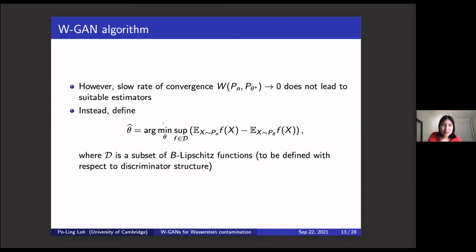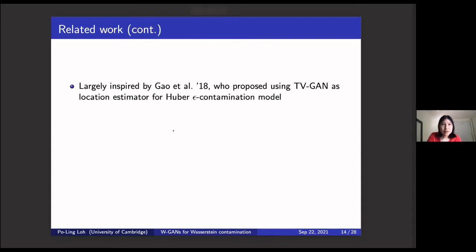Related work: in 2018, Chao Gao and coauthors looked at using the total variation GAN for location estimation in the Huber epsilon contamination model. In high dimensions, the Tukey median is known to perform optimally but is very hard to compute. Gao et al. proposed using a GAN as a workhorse to come up with an estimator that performs as well as the Tukey median in the Huber epsilon contamination setting. We were interested in whether, using a Wasserstein contamination model, one can use a Wasserstein GAN to also get optimal rates. There were also extensions to covariance matrix estimation and sparse location estimation.